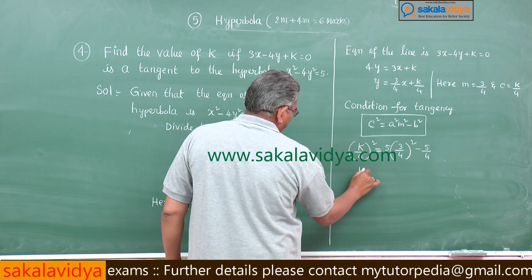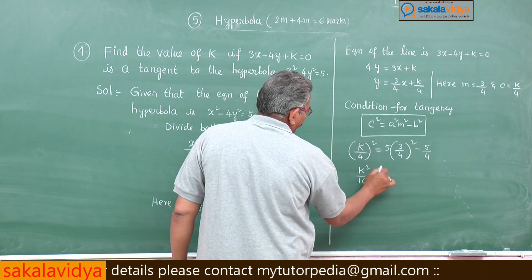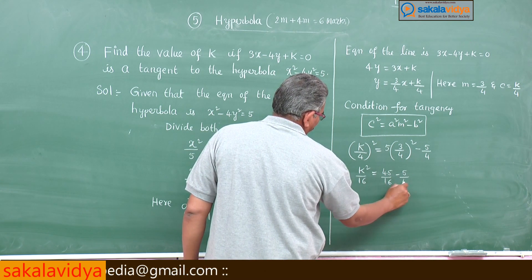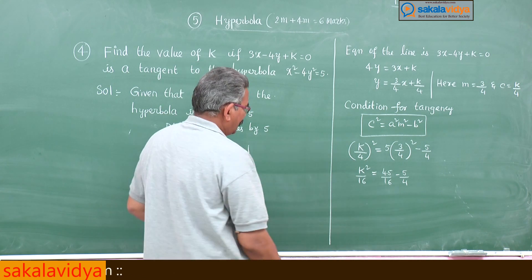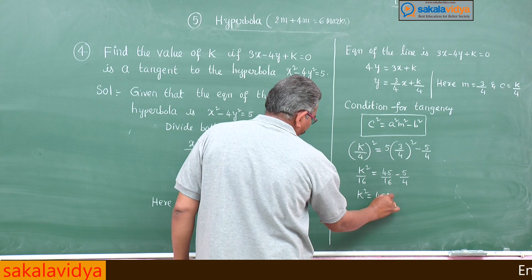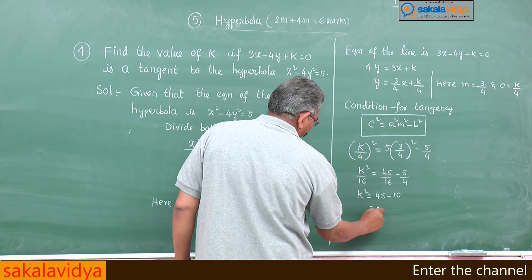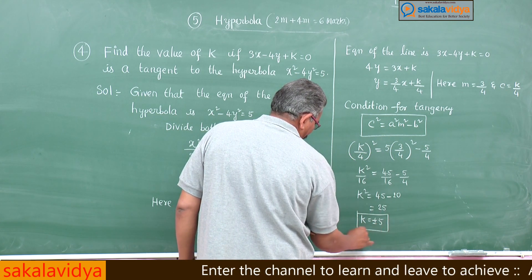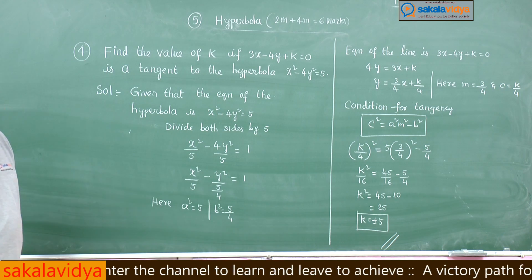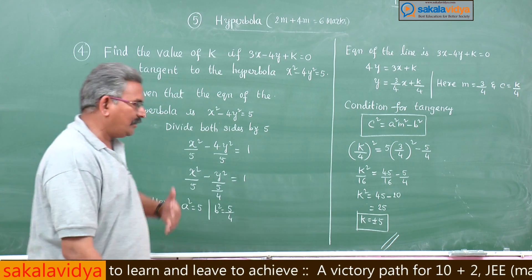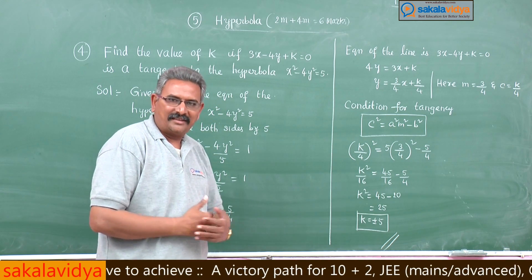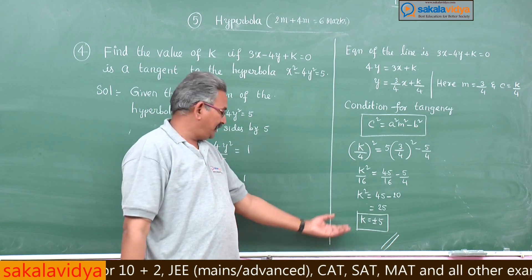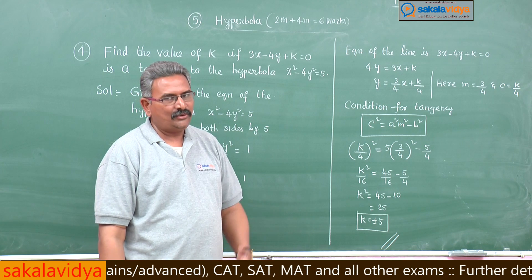Substituting: (k/4)² = 5·(3/4)² − 5/4, so k²/16 = 45/16 − 5/4. Multiplying both sides by 16: k² = 45 − 20 = 25, so k = ±5. The learning outcome of this problem is to determine the k value: k = ±5.